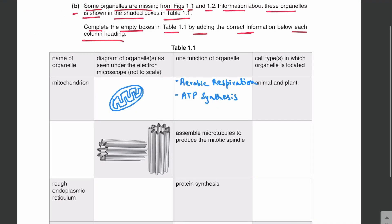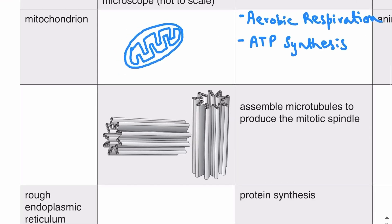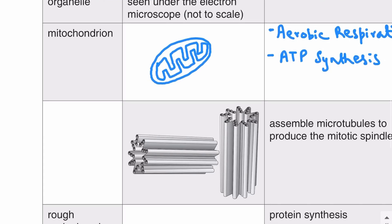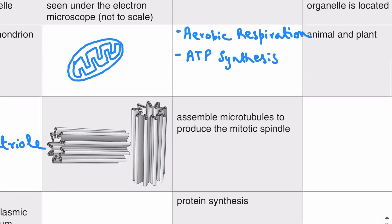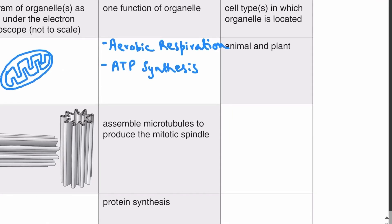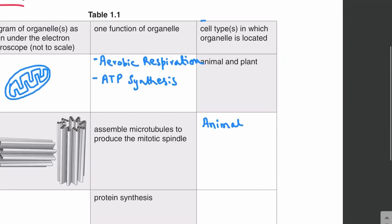The function of the mitochondrion is aerobic respiration — mitochondria break down glucose and other biological molecules such as lipids and proteins to release energy, which is transferred to ATP. So we can write ATP synthesis as the function. The mitochondrion is present in both animal and plant cells. Next, a cylindrical non-membrane-bound structure is shown — this is a centriole. Its function is to assemble microtubules to produce spindle fibres during mitosis. Centrioles are only found in animal cells.